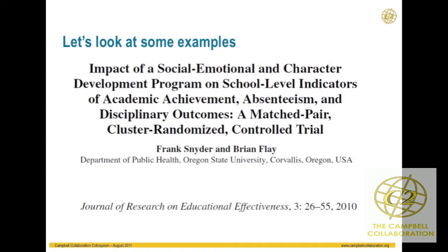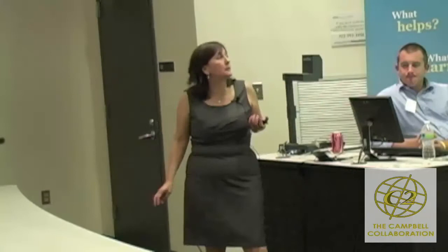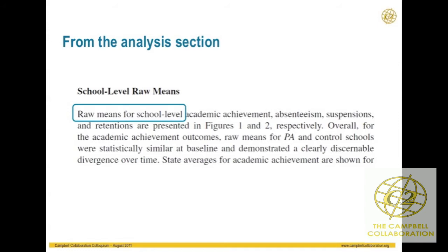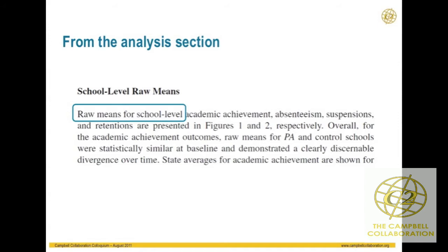Let's look at an example. This is a 2010 cluster randomized trial on the effect of a program called Positive Action — a character development program with many possible outcomes. This particular study looks at academic outcomes and absenteeism. From the analysis section I see school-level raw means, meaning the analysis is at the level of the school. The particular intervention was randomly assigned to schools, so I know I'm going to get cluster means.